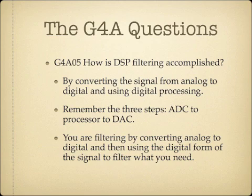How is DSP filtering accomplished? It's accomplished by converting the signal from analog to digital and using digital processing. Remember the three steps: ADC to processor to DAC. If you're filtering by converting analog to digital, then you're using the digital form of the signal to filter what you need.